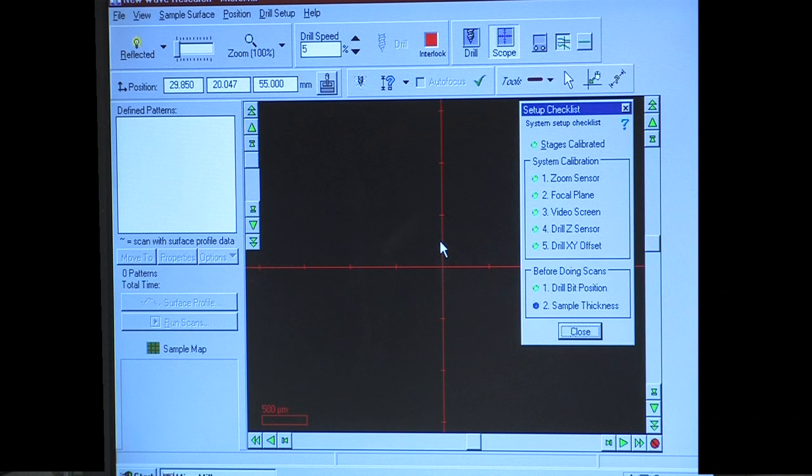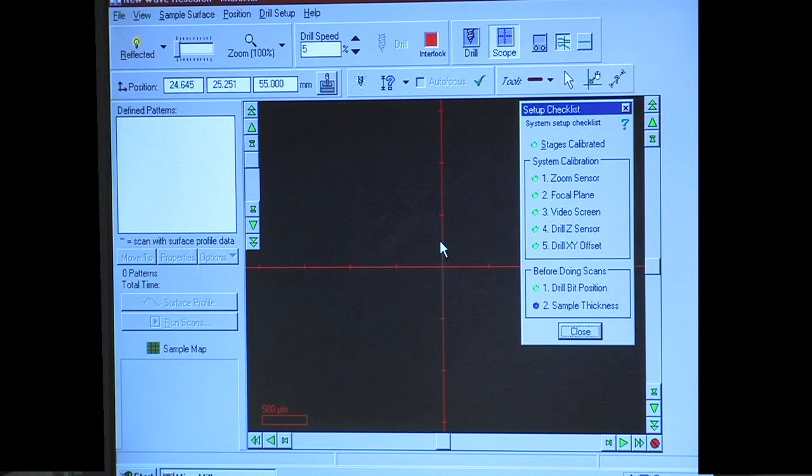Once this setup is done, you should have a series of green lights light up in the Setup Checklist window, except for the sample thickness.